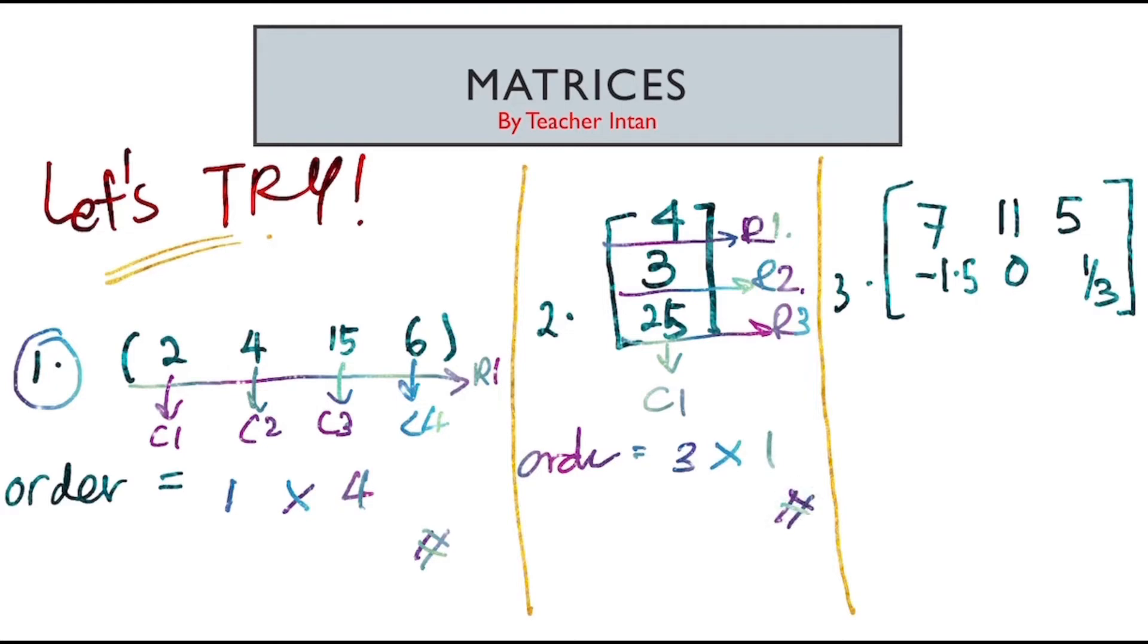Next, number 3. So, I have 1 row, 2 rows. And 1, 2, 3 columns. So, the order for this matrix is 2 times 3. So, how is it going so far? All good?